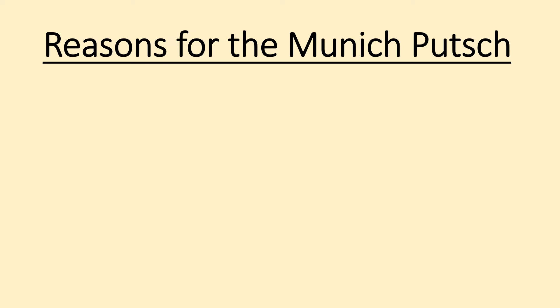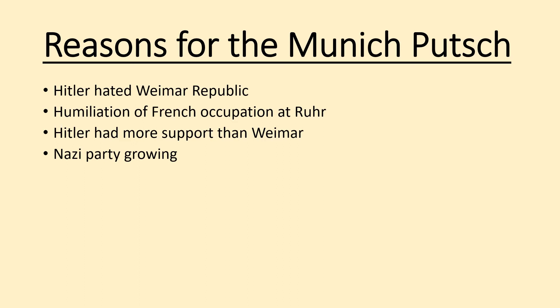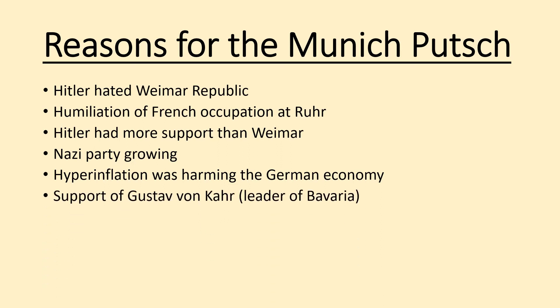There are several reasons for the Munich Putsch. First, Hitler personally hated the Weimar Republic, and so did a lot of people. The French had invaded the Ruhr, which was massively embarrassing — France had basically taken over part of Germany. Hitler believed he had more support than the Weimar government, and the Nazi party was growing as an increasingly popular political party. Hyperinflation had also been harming the German economy. He thought he had the support of Gustav von Kahr, who was leader of Bavaria.